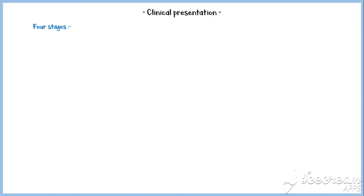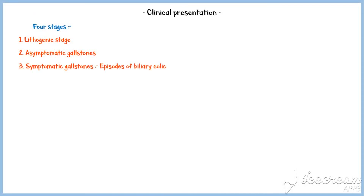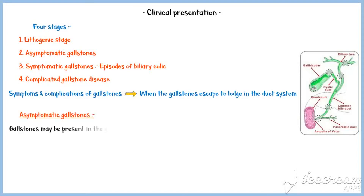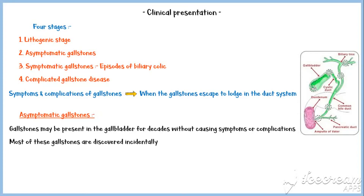Now let's discuss the clinical presentation of gallstone disease. Gallstone disease usually has four stages: lithogenic state, in which certain conditions favor gallstone formation; asymptomatic gallstones; symptomatic gallstones, characterized by episodes of biliary colic; and complicated gallstones. Symptoms and complications occur when gallstones escape the gallbladder to lodge in the duct system of the biliary tree. Asymptomatic gallstones may be present for decades without causing symptoms and are most often discovered incidentally.